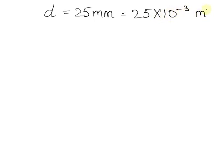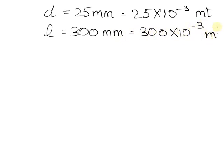and the length of the cylinder that is L is given as 300 millimeter which is equals to 300 into 10 raised to power minus 3 meter.